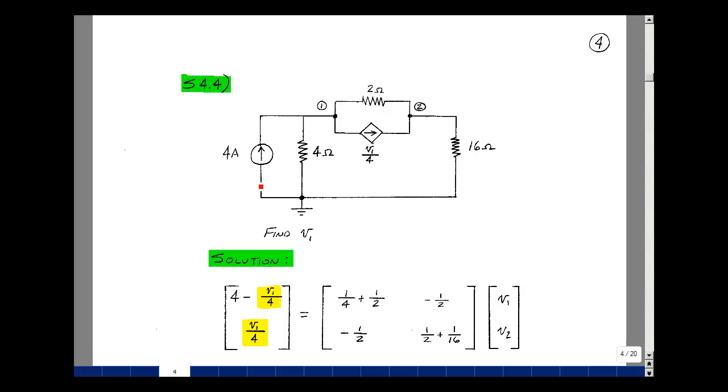Given this circuit with one independent current source, three resistances, and one dependent voltage control current source, can you solve for the node voltage V1?